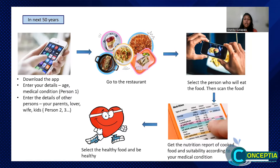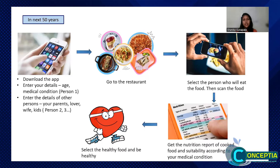You can enter the details of more than one person. For person one, you can enter your details, name it as 'myself,' and enter your age, your special nutrition requirements, and your medical conditions. For person two, you can enter the details of your beloved wife, your girlfriend, or your boyfriend — name it as 'my wife' with the heart icon — and enter her age, her special diet plans, and disease conditions. Likewise, you can enter details for person three, four, five.